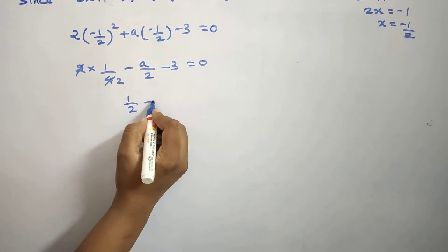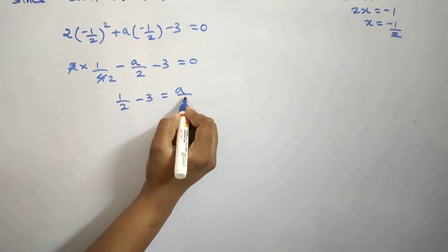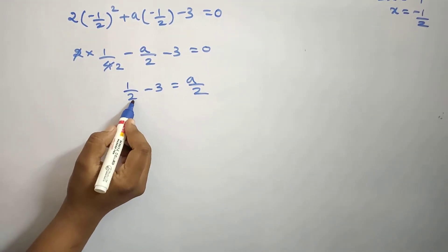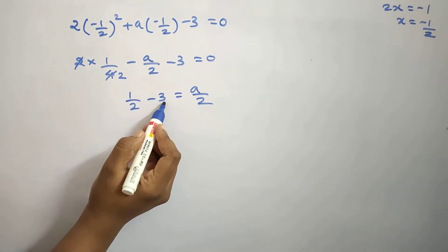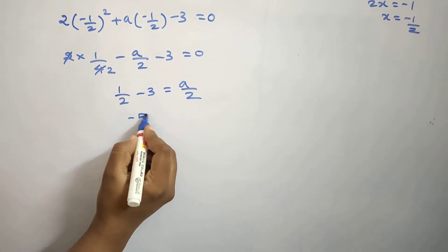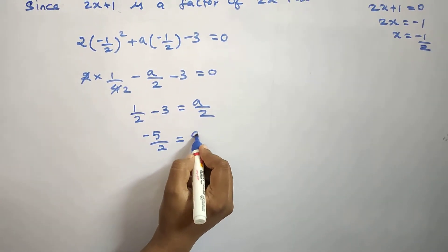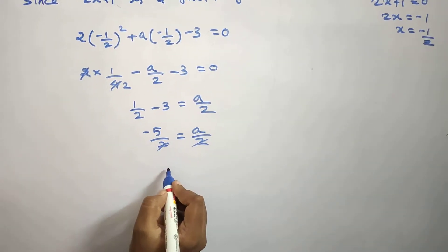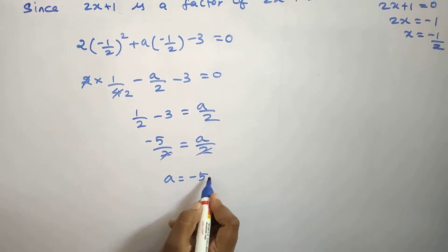So 1 by 2 minus 3 is equal to a by 2. Using cross multiplication with LCM: 2 into minus 3 means minus 6, so minus 6 plus 1 is minus 5 by 2, which equals a by 2. The 2s cancel, so a is equal to minus 5.